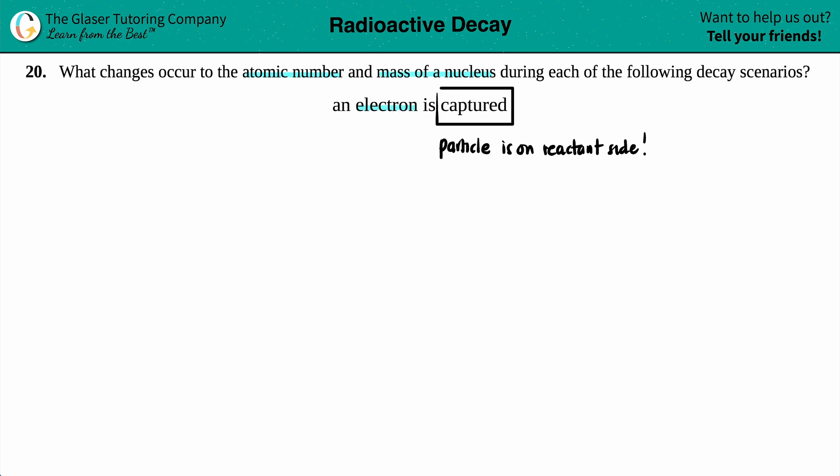Now an electron is the same thing as saying a beta particle, right? So just different ways of saying the same thing. They could have said an electron is captured or you're undergoing beta capture. It's a bit of a motto.